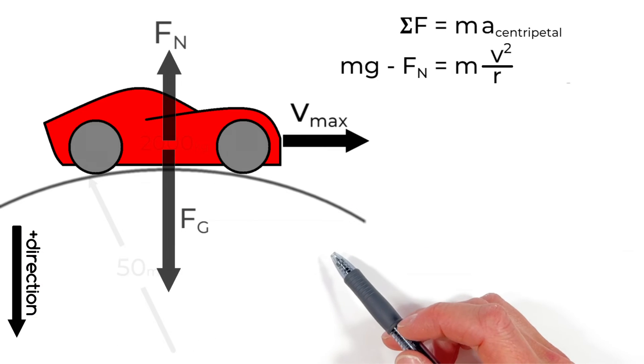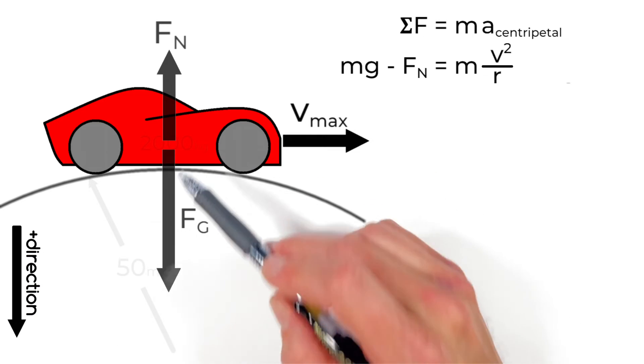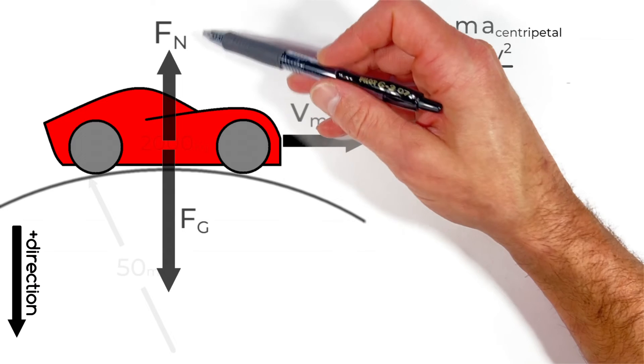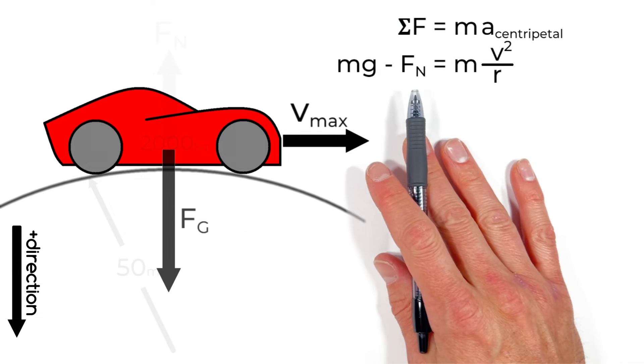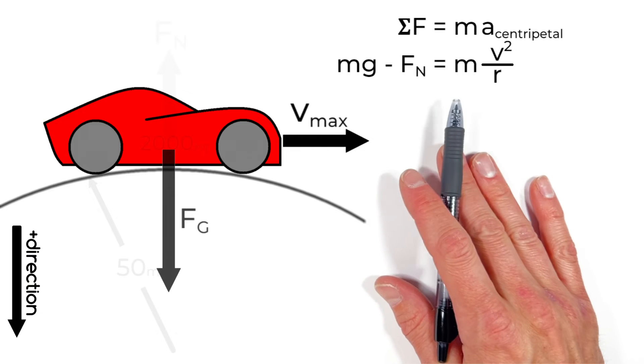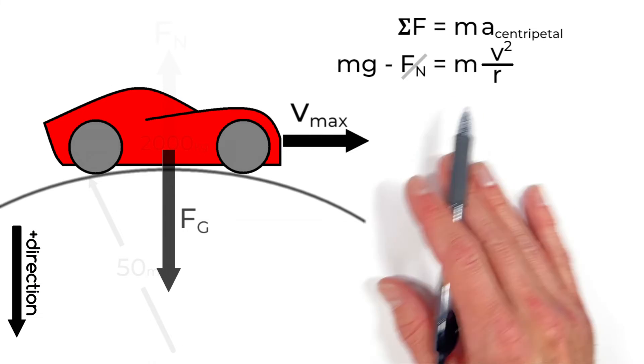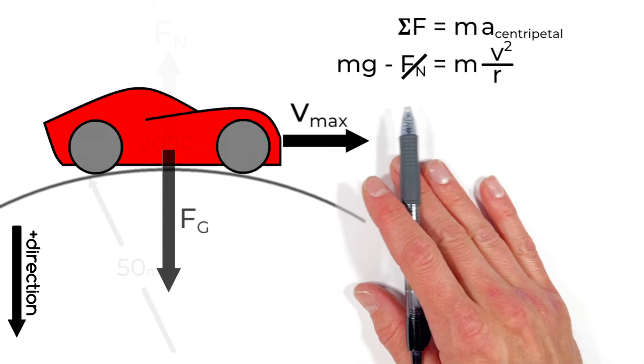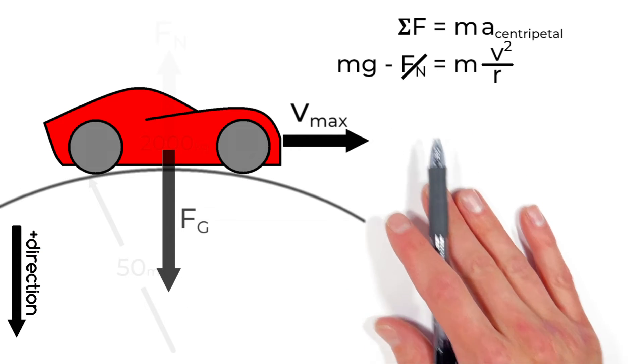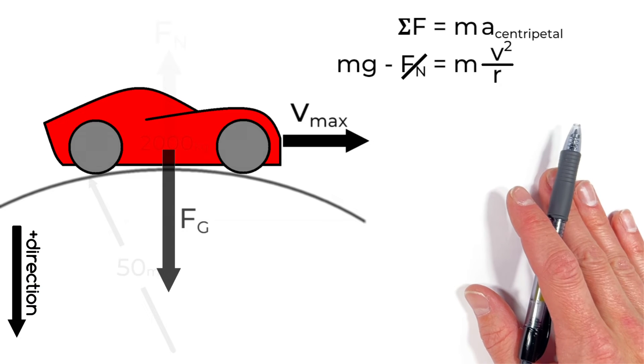You see as this car goes over the top of the hill just for an instant if it's going just the right speed there doesn't need to be a normal force holding the car up. At just the right speed the normal force acting on the car can be zero. That is to say the car is just starting to become airborne and at that point mg the force by gravity on the car is equal to the centripetal force.